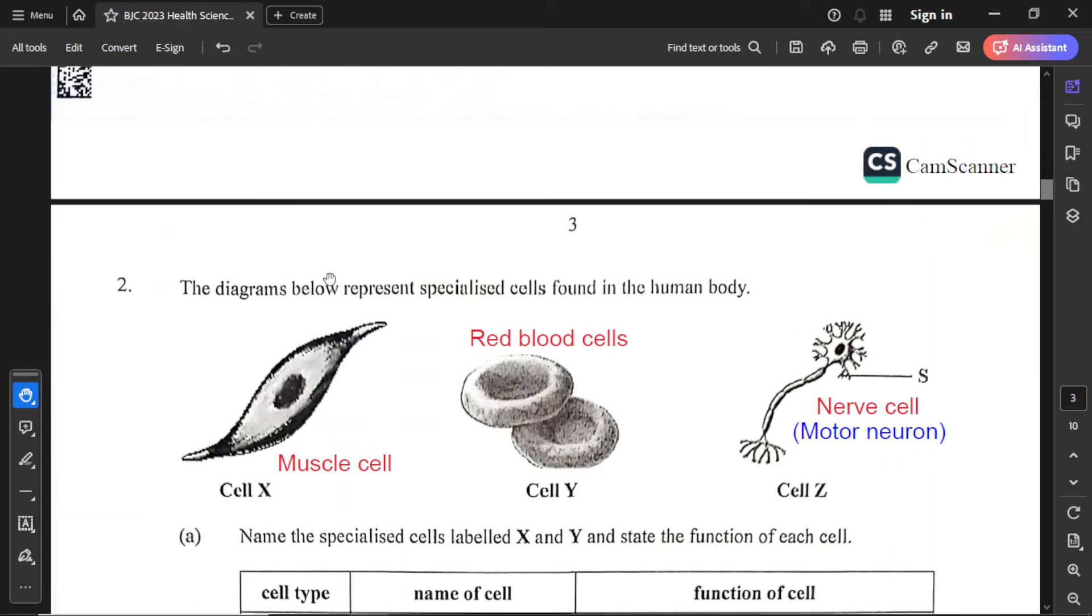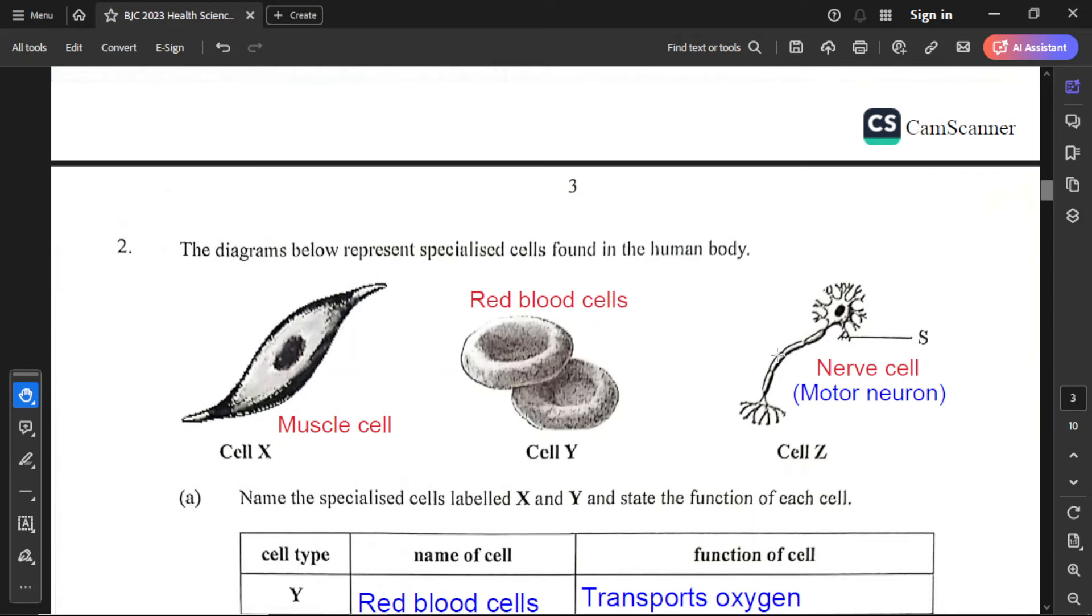For question number 2, diagrams below represent specialized cells found in the human body. I have already labeled. Cell X is a muscle cell, cell Y is a red blood cell, and cell Z is a nerve cell or neuron. To be specific, this is a motor neuron. How we know this is a motor neuron: the cell body is at the end. If the cell body was at the side, that would be sensory. If the cell body is in the middle with dendrites and nerve endings at opposite ends, that would be a relay neuron.